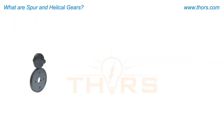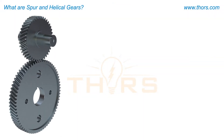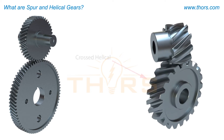Other types of helical gearing include crossed helical gears, which are identical to helical gears in every respect except for their mounting relationship.